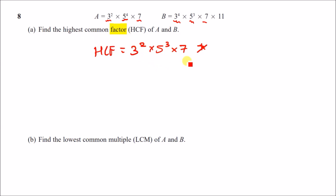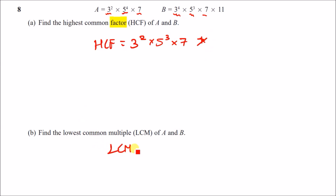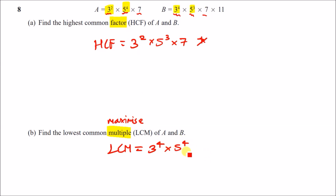Part b: find the lowest common multiple. For LCM, think 'maximize' — take the highest power of each prime from either number. Three to the two vs three to the four: highest is three to the four. Five to the four vs five to the three: highest is five to the four. Seven appears once in both: just seven. Eleven appears in one but not the other: include eleven. LCM is 3⁴ × 5⁴ × 7 × 11.